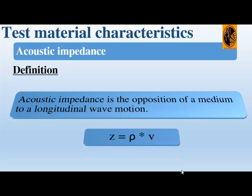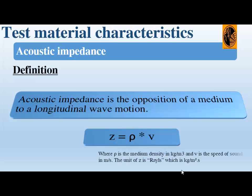It can be worked out using the following formula: Z equals P multiplied by V, where P is the density of the medium and V is the speed of sound in meters per second. The unit of acoustic impedance is Rayls, which is kilogram per meter squared multiplied by second.